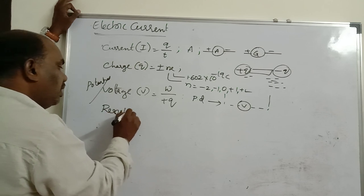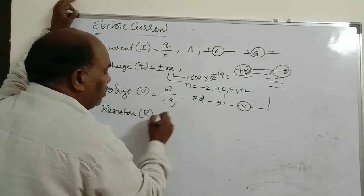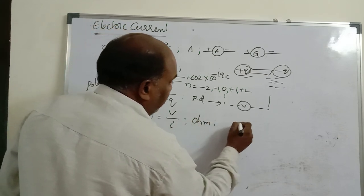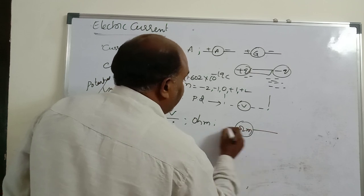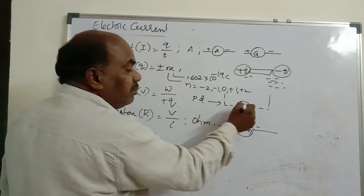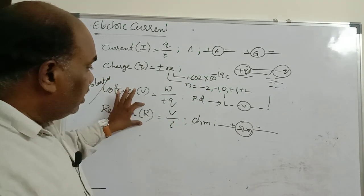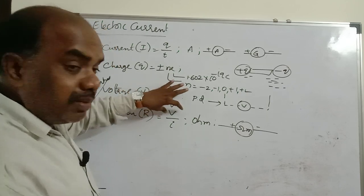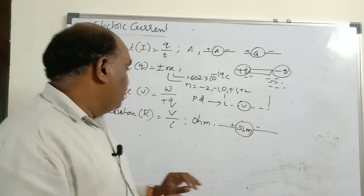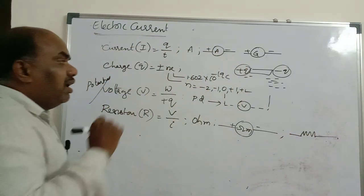Resistance is denoted by R. V = IR, so R = V/I — that is Ohm's law. Resistance unit is ohm. To measure resistance, we use an ohmmeter, which is connected in series. Except voltmeter, all instruments must be connected in series; only voltmeter is connected in parallel. Resistance formula is voltage divided by current. Symbol of resistance is like a saw blade. Ammeter and galvanometer: ammeter measures in amperes, galvanometer in milliamperes.